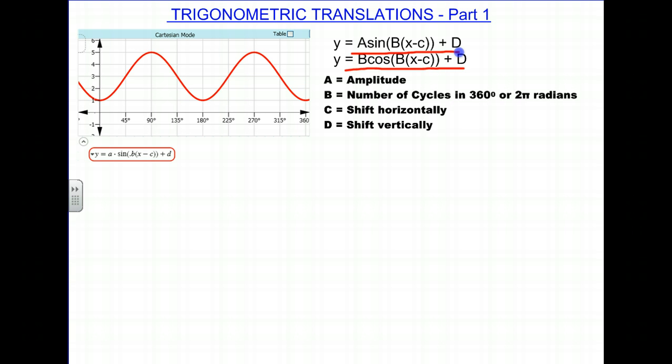And as a reminder, we should know that the A is equal to the amplitude, B is the number of cycles in 360 degrees or 2π radians, C is the amount to shift horizontally, and D is the shift vertically.